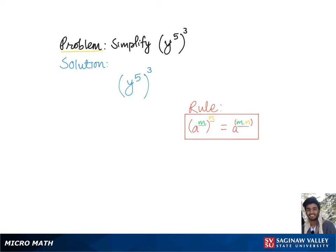Here in our problem, we have y raised to the 5th power and the whole group raised to the 3rd power. So to simplify this, we will keep the base y and multiply the exponents, which is 5 times 3, which gives us the final answer y to the 15th.